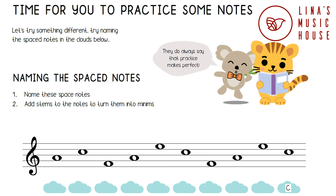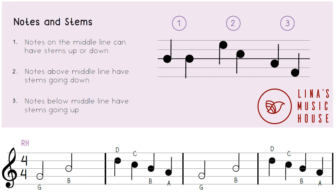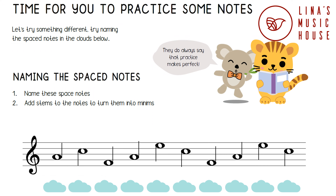You've just named all of the treble clef space notes. We will now add stems to the notes to turn them into minims. Do you remember the rule for when stems should go up or down? Notes on the middle line can have stems up or down. Notes above the middle line have stems going down. Notes below the middle line have stems going up. When the stem goes up, the note looks like a D. When the stem goes down, the note looks like a P.